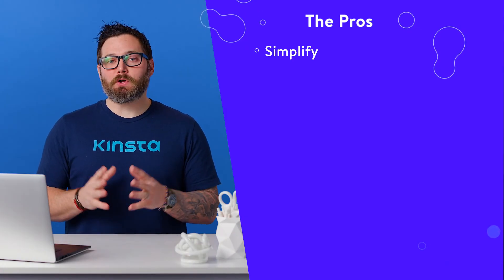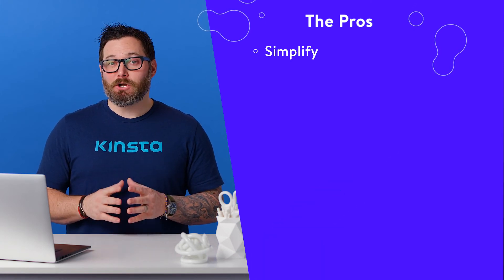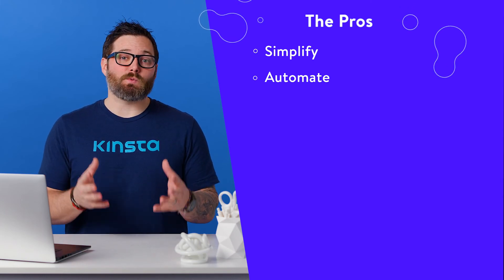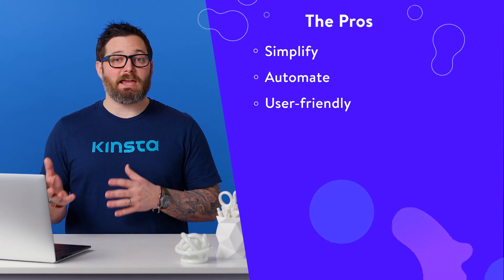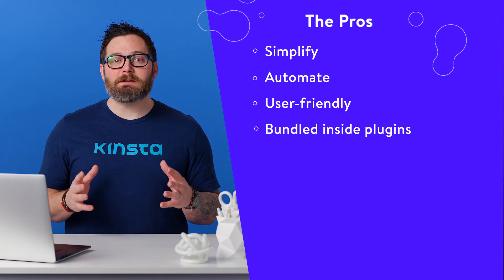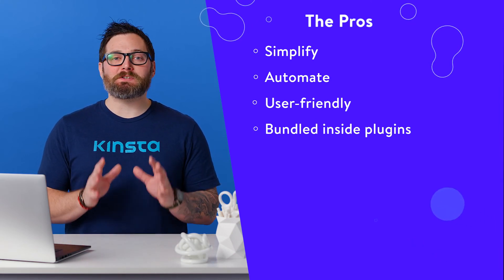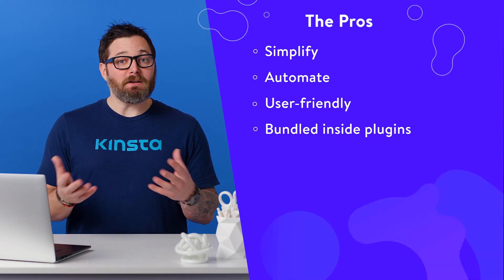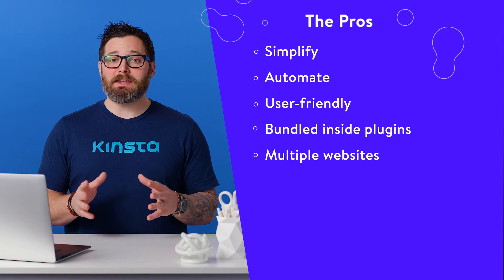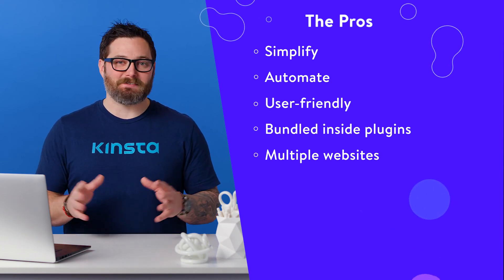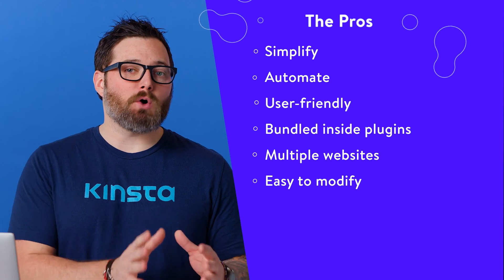Now let's go over some pros and cons for WordPress shortcodes. Here are some pros. Shortcodes simplify the addition of complex features in WordPress sites — you can add almost anything by typing a single line of code. Shortcodes automate the development workflow; they eliminate the need to write complex scripts every time you want to insert a certain feature. Shortcodes are more user-friendly than adding HTML code or PHP scripts. Shortcodes can be bundled inside plugins — even if you update WordPress or change your theme, they'll stay valid and continue to work. Bundling shortcodes inside plugins makes them easy to use across multiple WordPress websites. Since shortcodes also accept attributes, users can modify how the same shortcode behaves by just altering its attribute options.